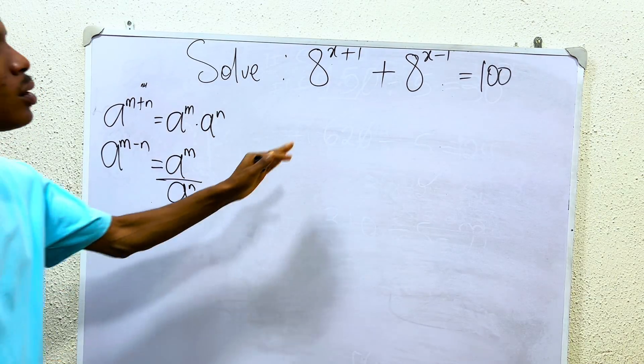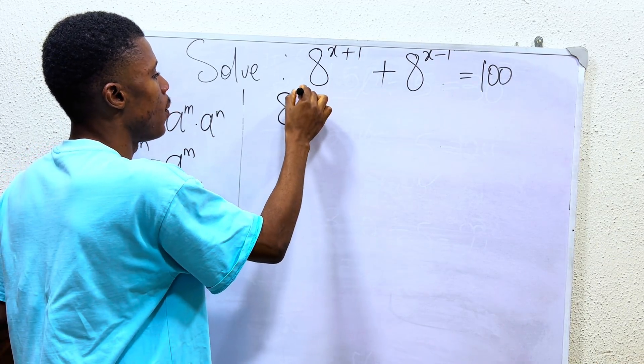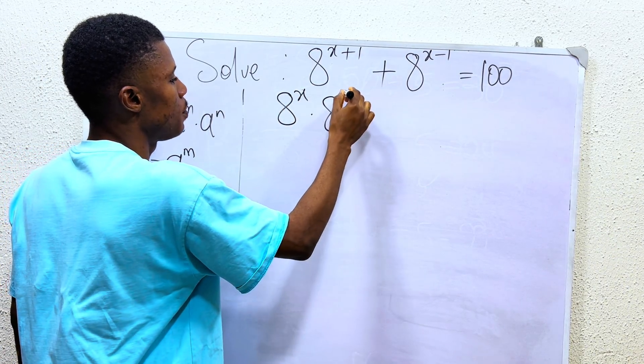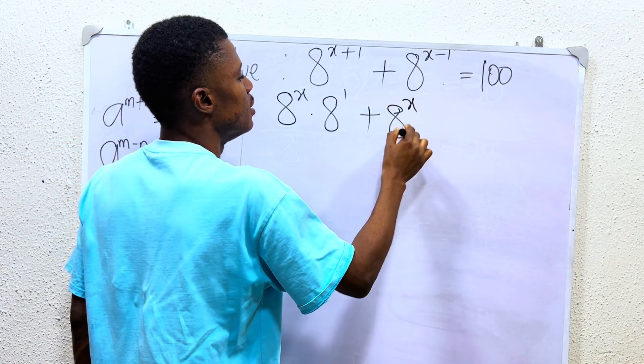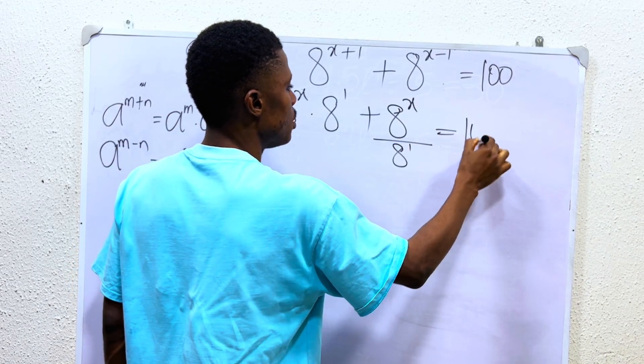If you understand this, you are going to apply it here. So first, 8 power of x, since I'm adding, I have to multiply times 8 to the power of 1, then plus 8 power of x divided by 8 power of 1, and that equals 100.